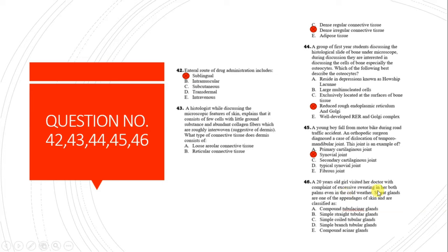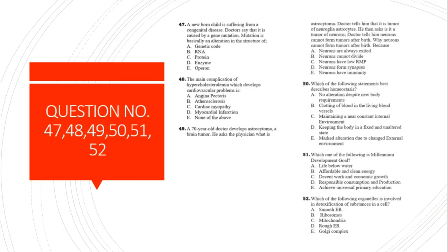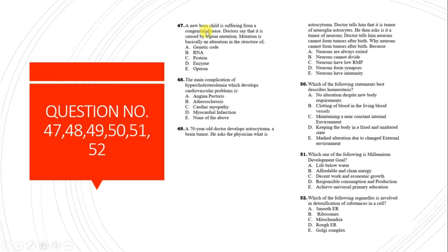Question 46: A 20-year-old woman with excessive sweating from both palms even in cold weather. Sweat glands are classified as simple straight tubular glands.